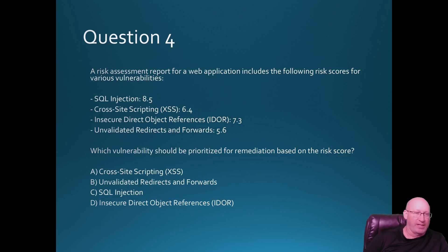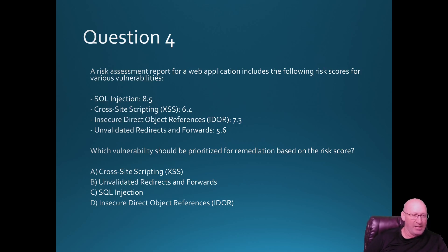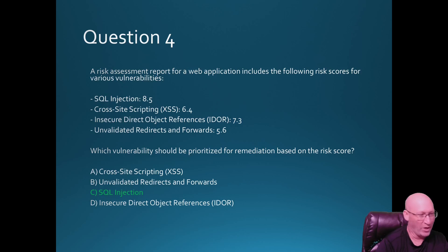Question four: a risk assessment report for a web application includes risk scores — SQL injection at 8.5, cross-site scripting at 6.4, insecure direct object reference at 7.3, and unvalidated redirects and forwards at 5.6. Which vulnerability should be prioritized for remediation? This one is very easy — just look at the scores. SQL injection has the highest score at 8.5, so the answer is C: SQL injection.